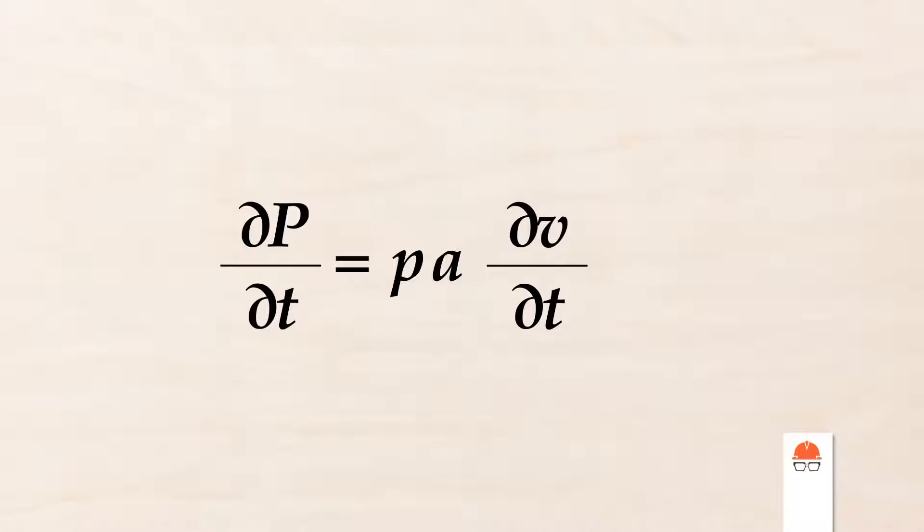This is the equation for the pressure profile of a water hammer pulse. We're not going to do any calculus here, but the terms of this equation show the parameters that can be adjusted to dial back these damaging forces. And the first one is obvious. It's the speed at which the fluid is moving through the pipe.